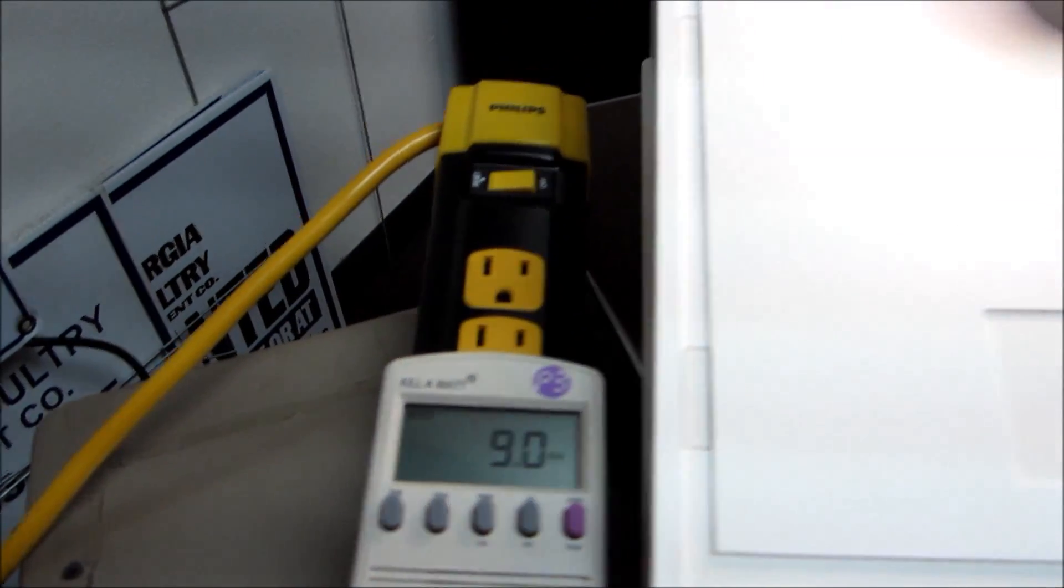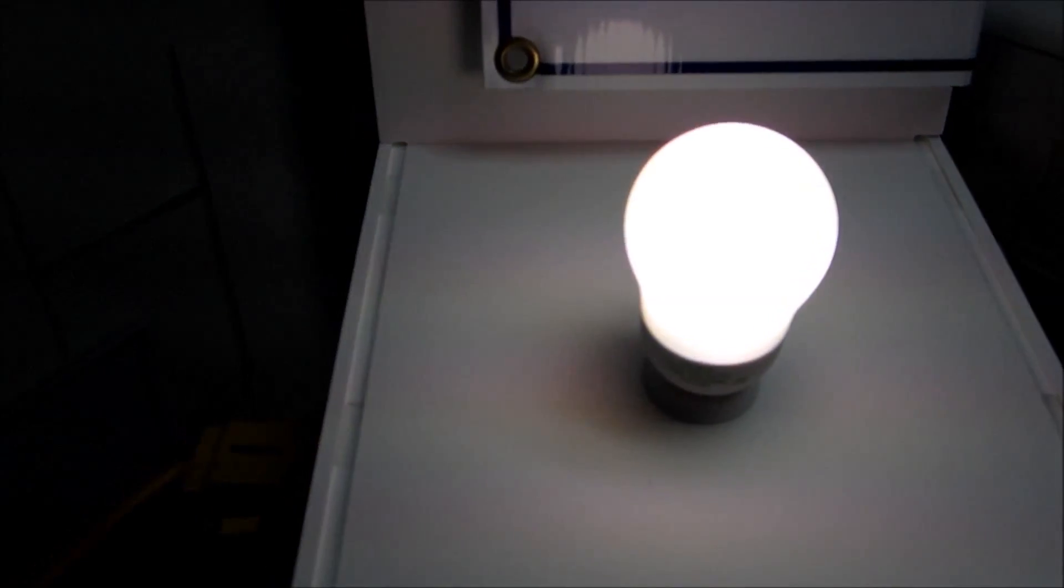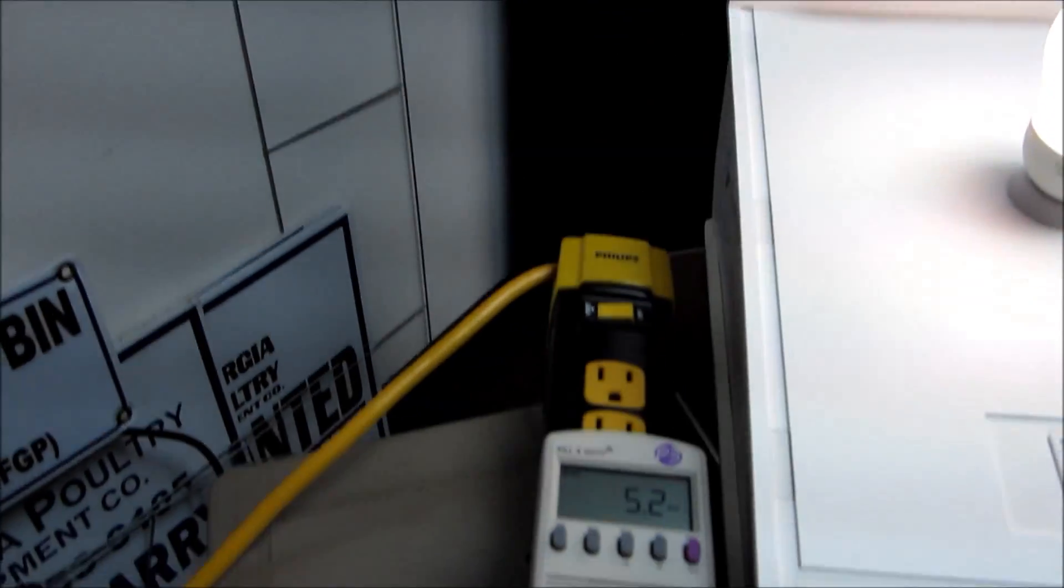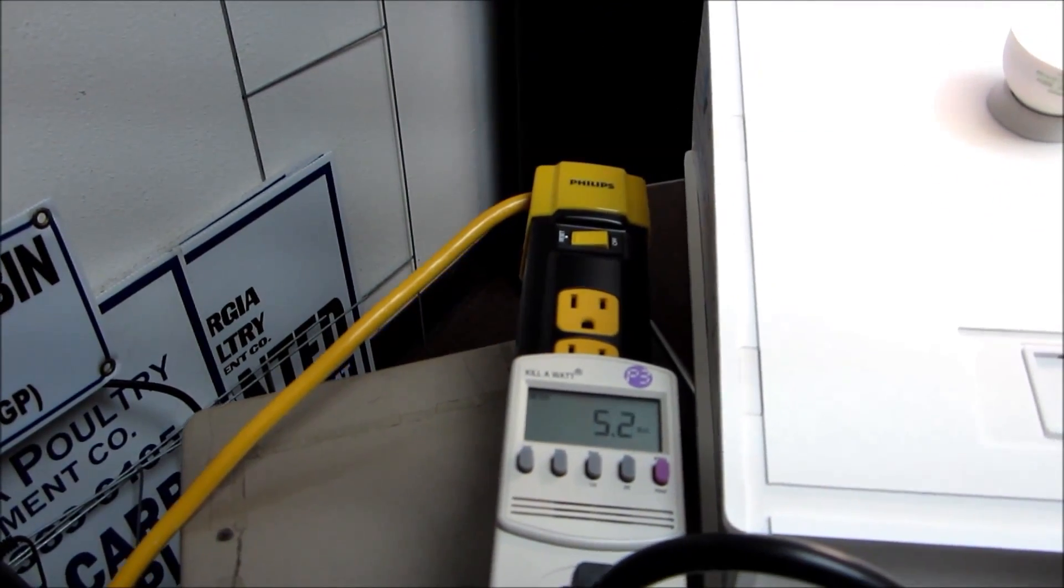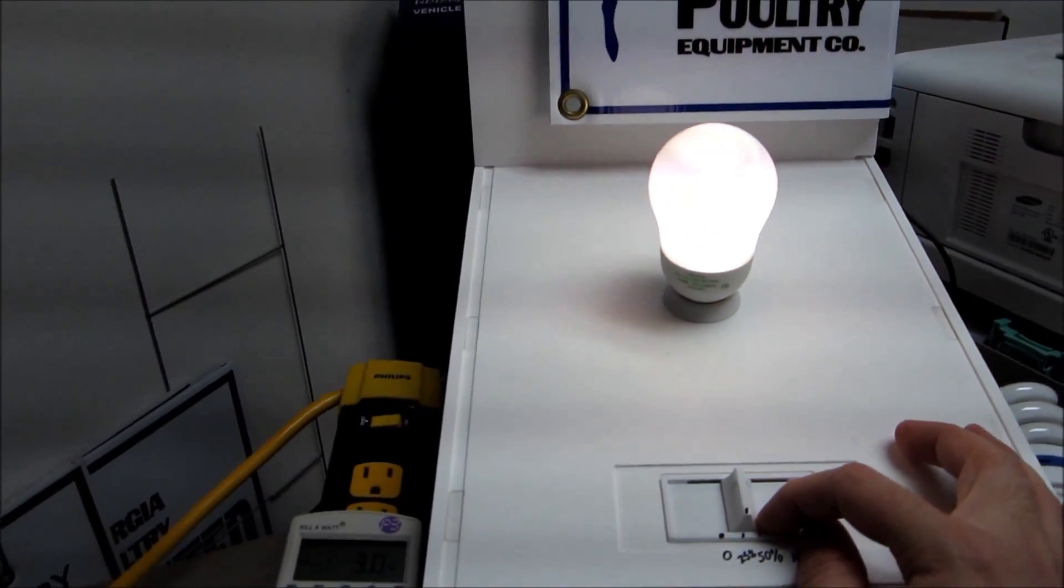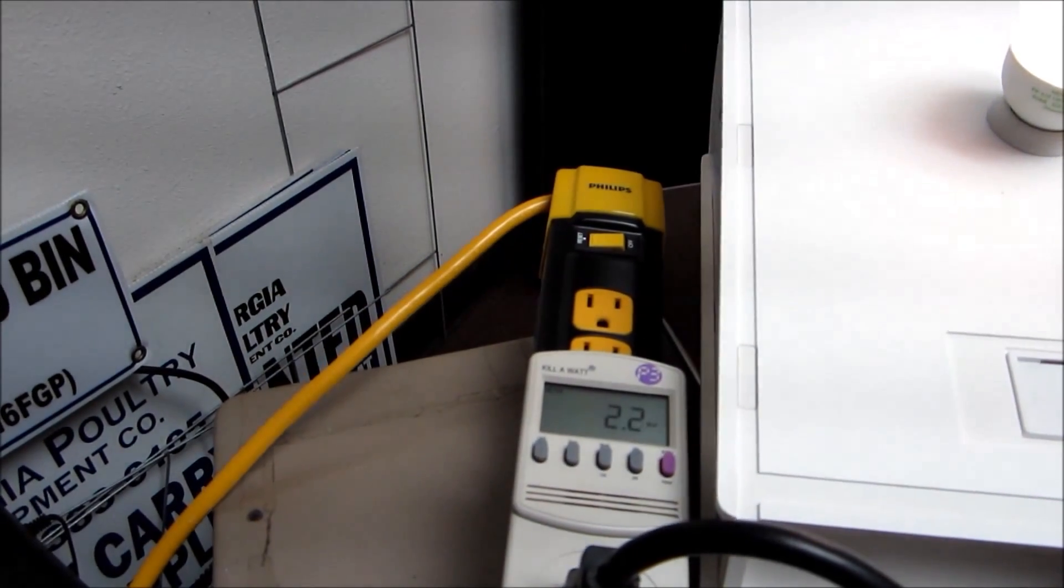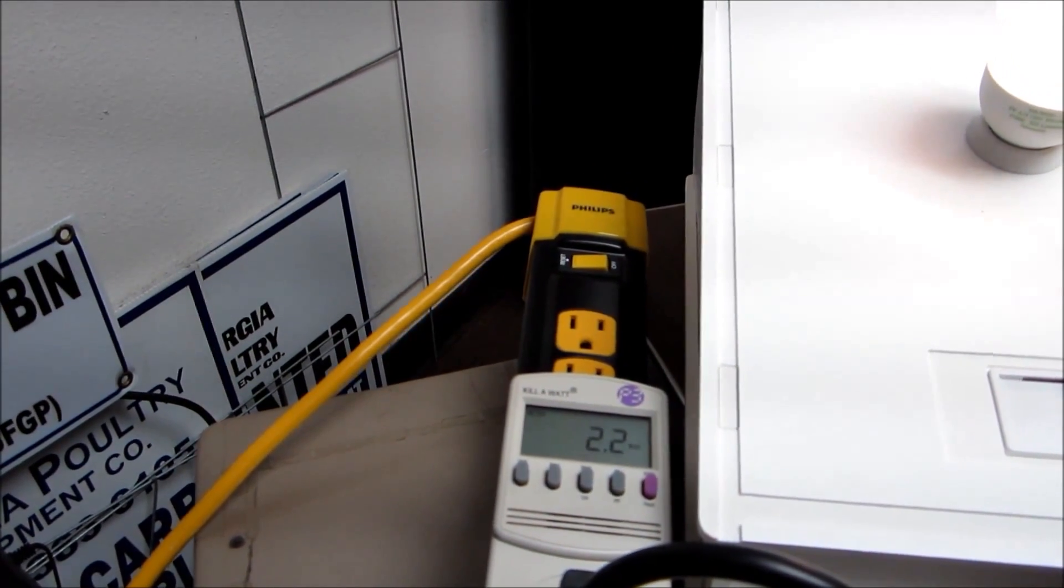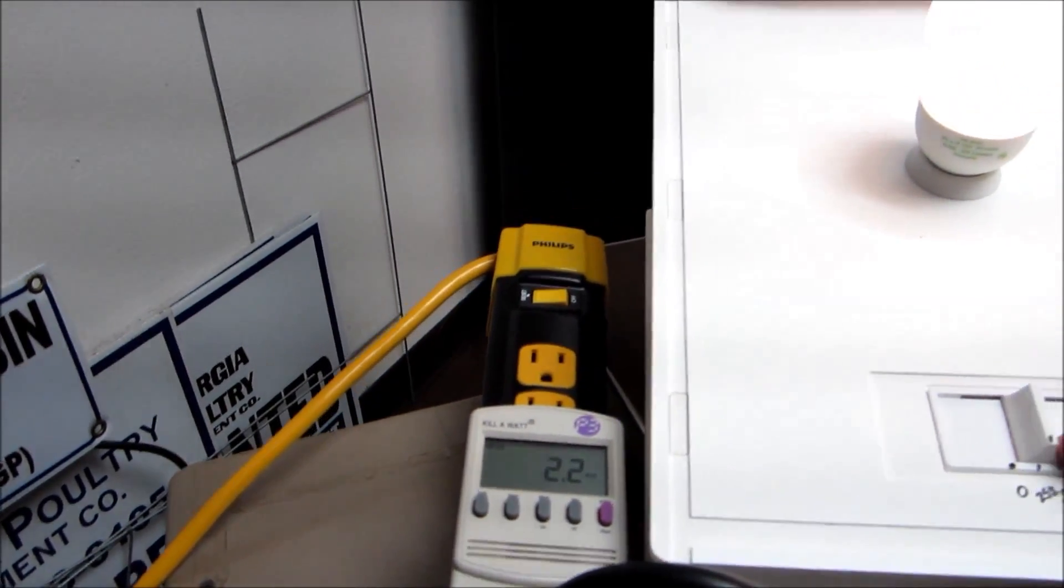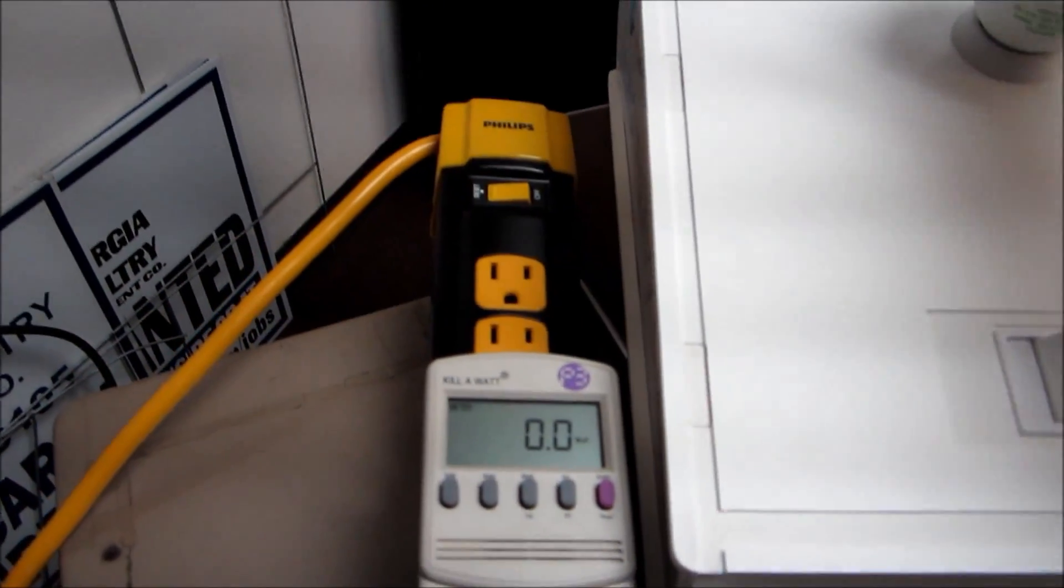We are going to dim it down to 50% on the dimmer and we are using 5 watts of electricity basically. And then we are going to dim it down to 25% on the dimmer which is pretty low and we are using basically 2 to 2.2 watts of electricity. And then of course off and we are back to zero.